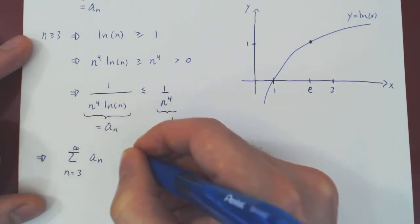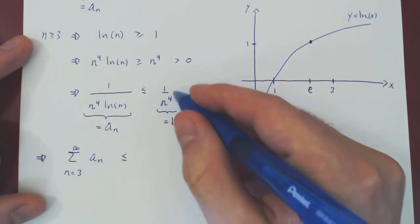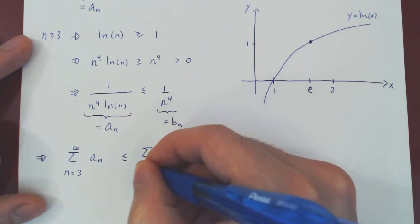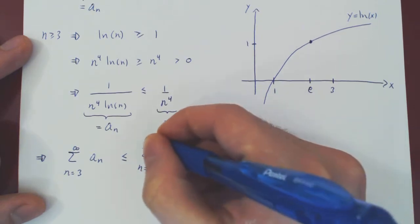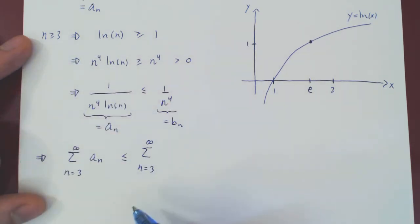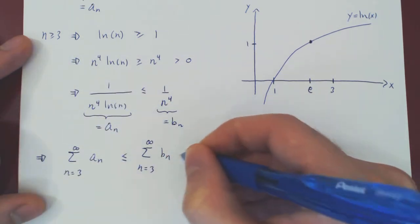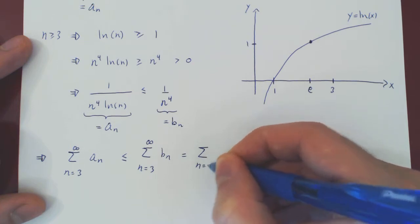this will be, of course, smaller than summing the larger terms from 3 to infinity. But we know what bn is, it's 1 over n to the 4.